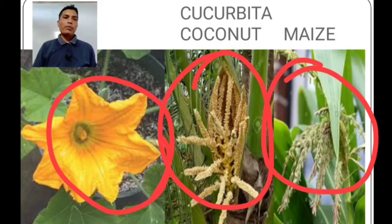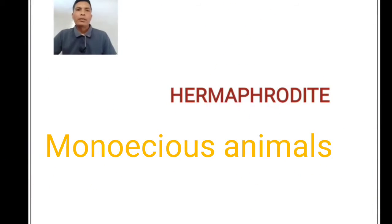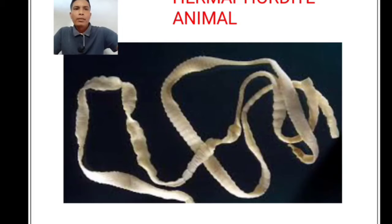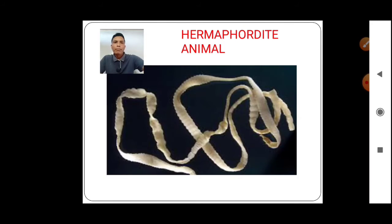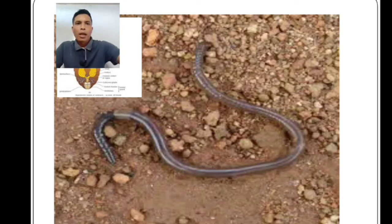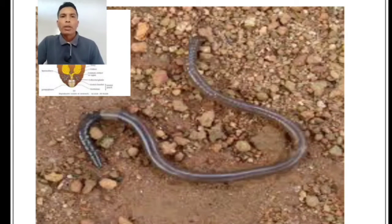Bisexual or monoecious animals are called hermaphrodite animals. For example, tapeworm — in tapeworm, the maturity of male and female sexes occurs at the same time, and that is why self-fertilization occurs. Another hermaphrodite animal is earthworm. Earthworm does not have self-fertilization because the maturity of male and female sexes is not synchronized.